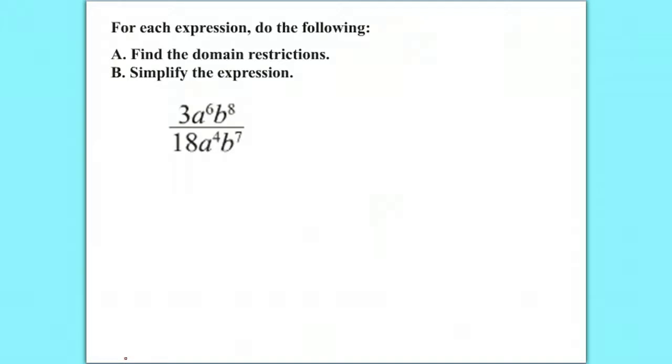So, for part A, with the domain restrictions, if you have a rational expression, it just means you have a monomial or a polynomial in your numerator and denominator. The thing with domain restrictions is you don't ever want your denominator to equal zero.